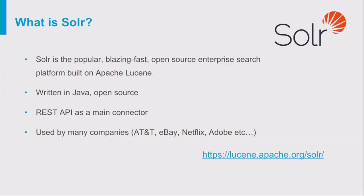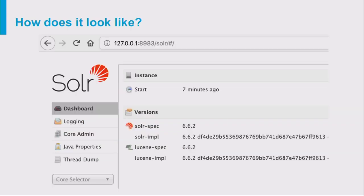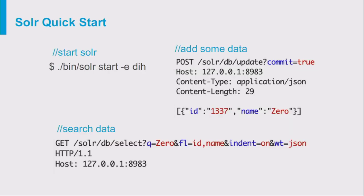It turned out that Solr is a quite popular open-source search database, written in Java and used by many companies. It has a very nice web UI that you can use to perform almost any operation. You may think about it like a database — you just post some data into it, and this data could be in almost any format including PDF, Word, or even HTML pages, but here it's just JSON.